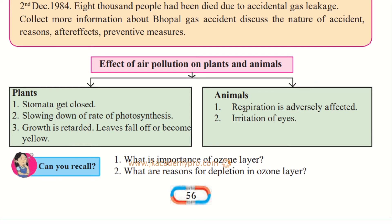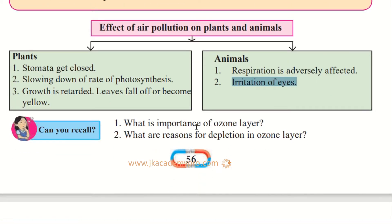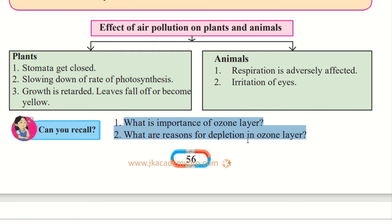For animals, just like human beings, respiration is adversely affected and there is irritation of the eyes due to air pollution. Can you recall what the importance of the ozone layer is? There is a layer of ozone in our environment that protects us from the harmful rays of the sun. Can you recall what you have already learned about the reasons for depletion of the ozone layer?